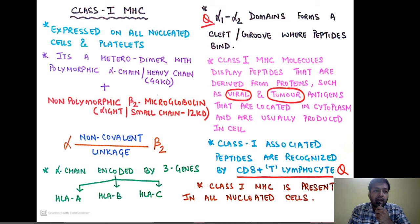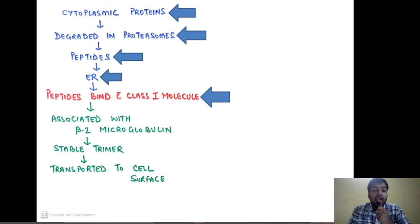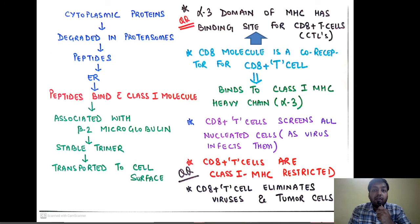Class 1 MHC is present in all nucleated cells — remember this. Cytoplasmic proteins derived from viruses or tumors are degraded in the proteasomes and form peptides. These peptides are taken to the endoplasmic reticulum where they bind with the class 1 MHC molecule. After binding, they associate with beta 2 microglobulin, a stable trimer is formed, and then the MHC along with the peptide is transported to the cell surface.